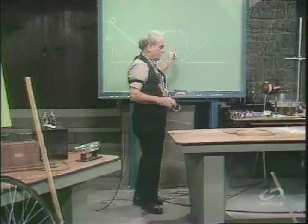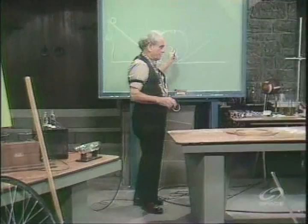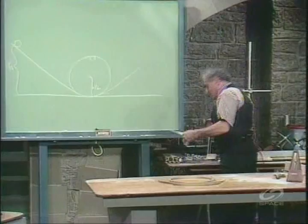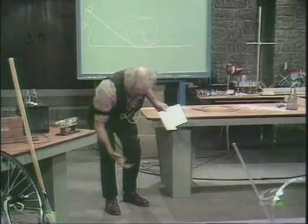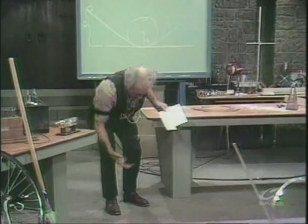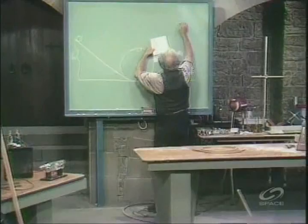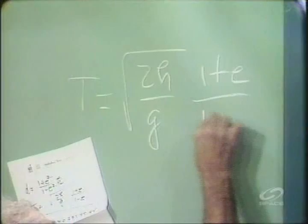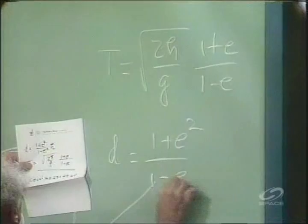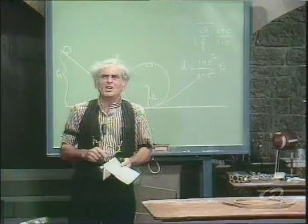You remember I wrote some equations on the board earlier whereby you could find — and I want to write them again because they're delightful to engage in — the total time that ball would bounce. 1 plus E and 1 minus E. And the total distance it goes is 1 plus E squared over 1 minus E squared. I do this again because mathematics is so essential to your life — absolutely, especially if you are going to understand nature at all.